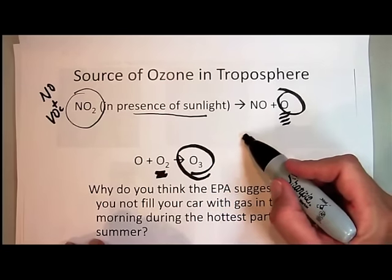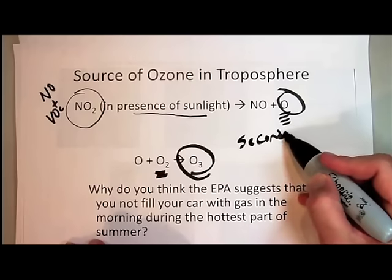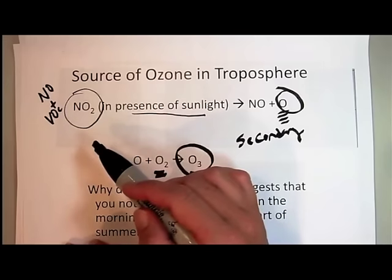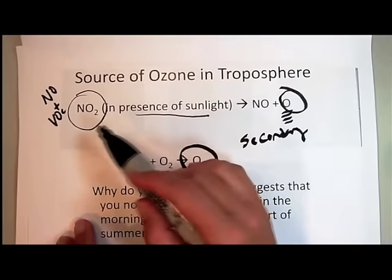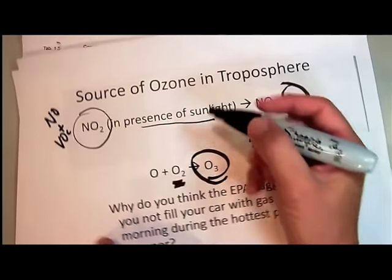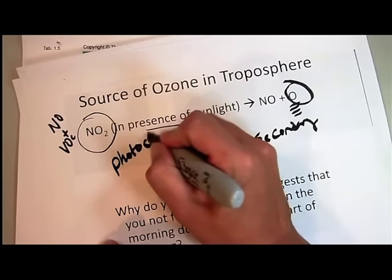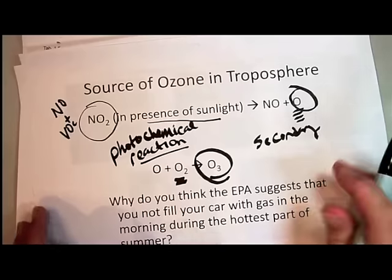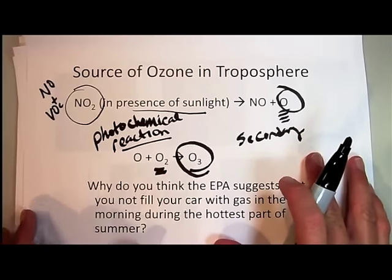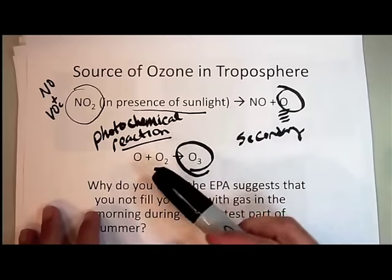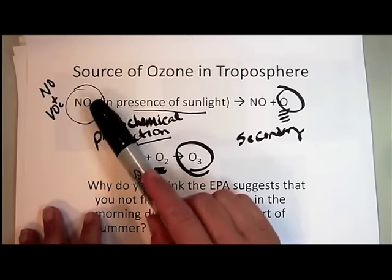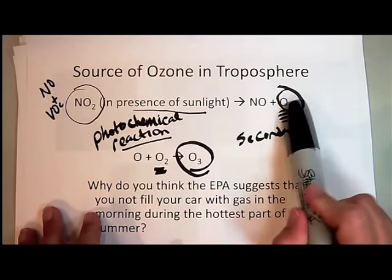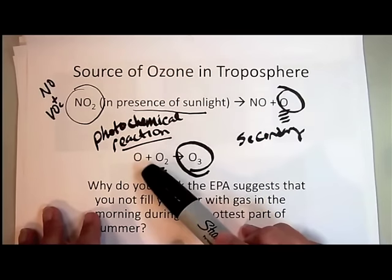Ozone is considered a secondary pollutant because it's not the result of the burning of fossil fuel directly — it's the result of the products from burning fossil fuel in the presence of sunlight. When a chemical reaction occurs in the presence of sunlight, that's called a photochemical reaction. That's a type of reaction that happens in the presence of light. There's something about the energy inherent in sunlight that has enough energy to disrupt that bond and break it.